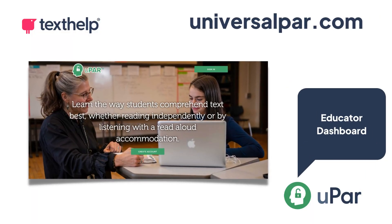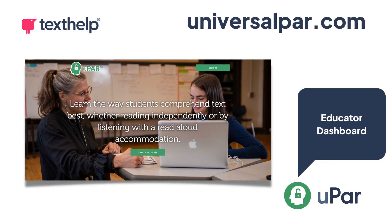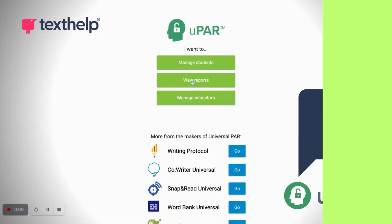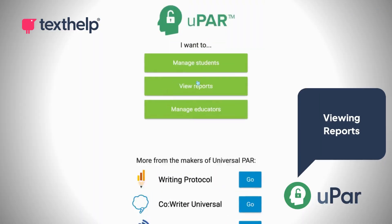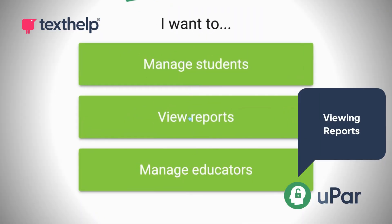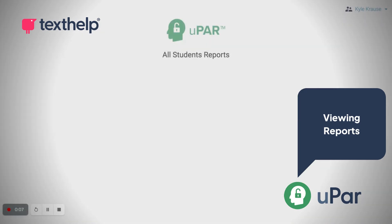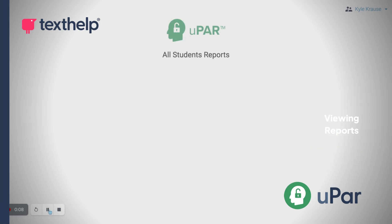First things first, head over to UniversalPAR.com and click on the View Reports button. From there, select All Students to view both group and individual student reports.